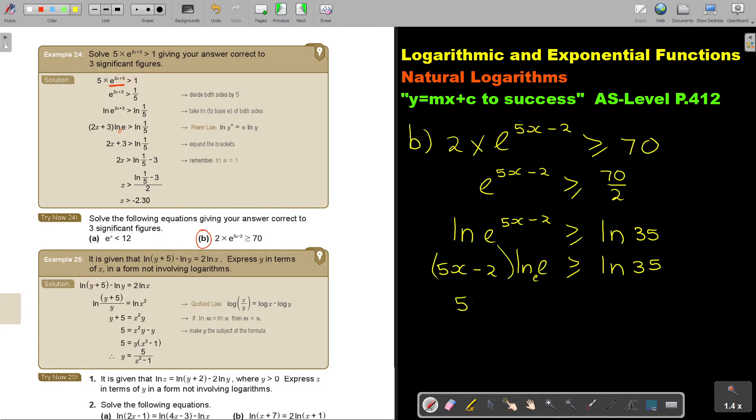So 5x is bigger and equal to ln 35 plus 2. And then I divide 5 and I divide 5. So x is going to be bigger and equal, and I'm just pressing on my calculator. I'm going to press ln 35 plus 2 equals, divide 5 equals. And I'm going to get x is bigger and equal to 1.11.